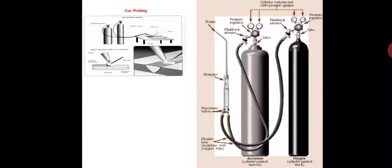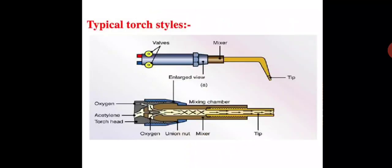The oxygen cylinder is black in color and is a long cylinder, while the acetylene cylinder is maroon and is a little shorter. The figure shows the torch — as already discussed, it has valves, a mixing chamber, and a nozzle tip.